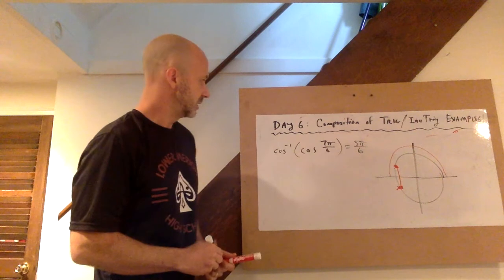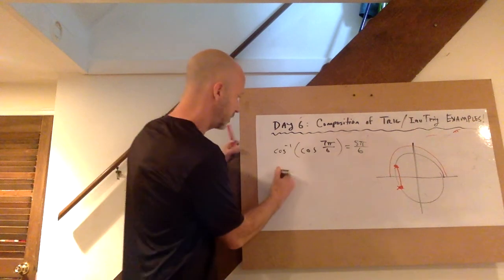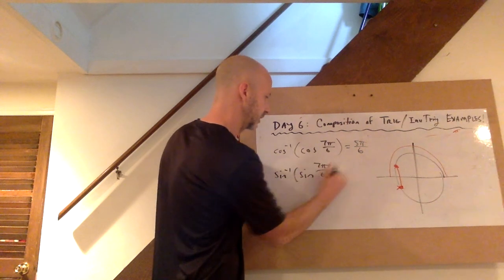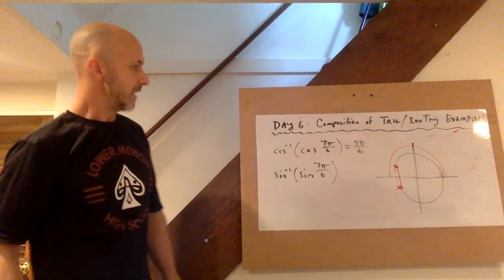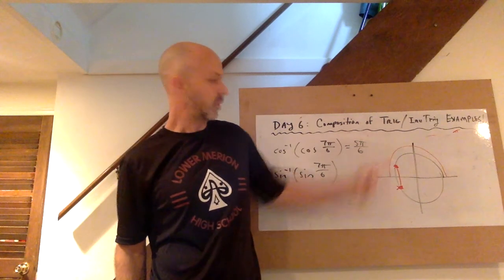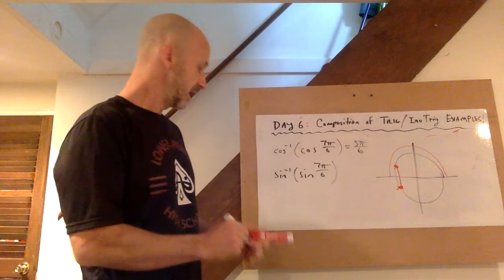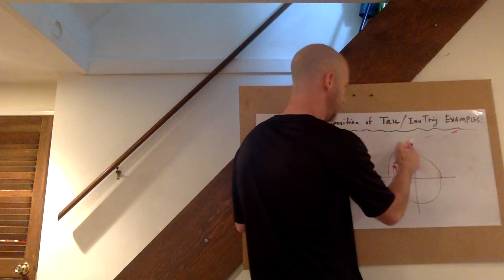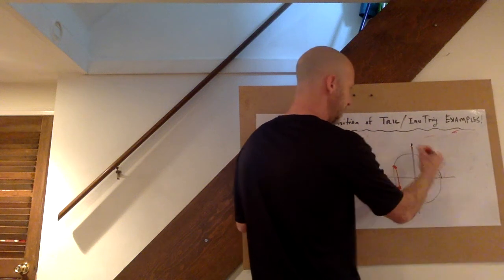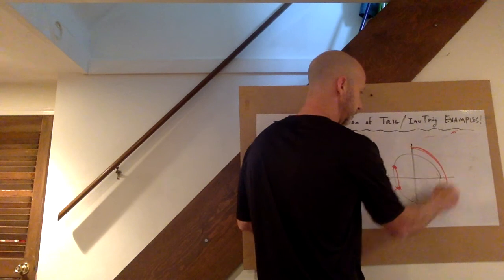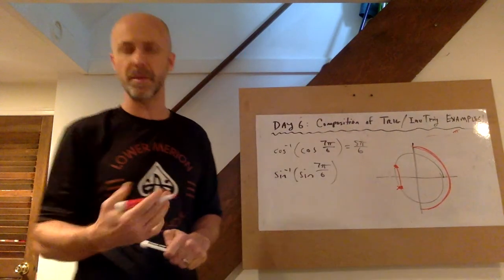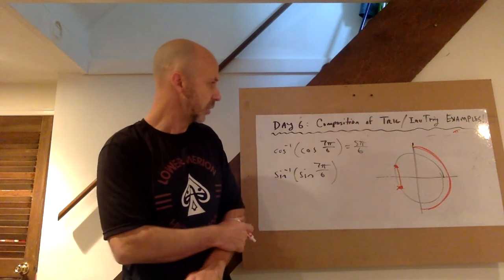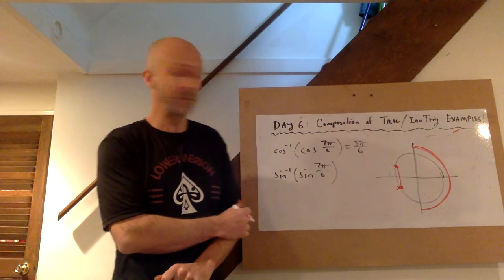Meanwhile, if I ask this same problem but with a sine, sine inverse of sine of 7 pi over 6, well, now I can't be given an answer here in quadrant 2 for two different reasons. One, inverse sine has a range from not 0 to pi, but negative pi over 2 to pi over 2. So inverse sine only outputs acute angles, positive or negative. 7 pi over 6 won't do. 5 pi over 6 won't do.